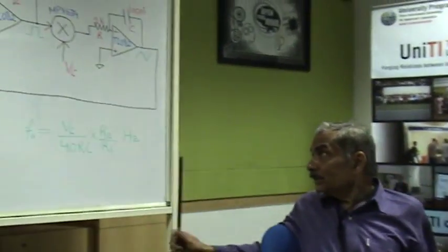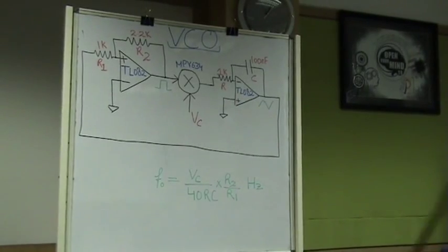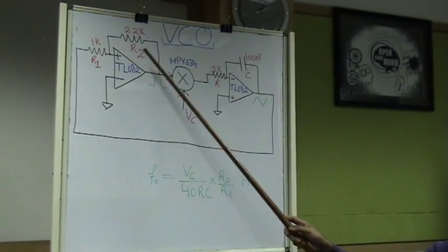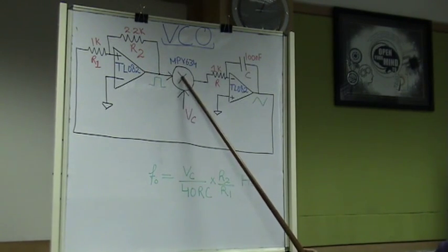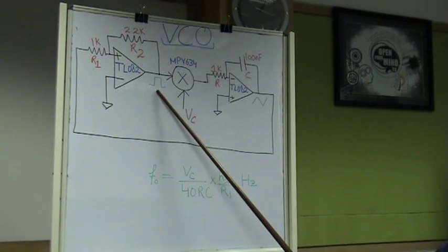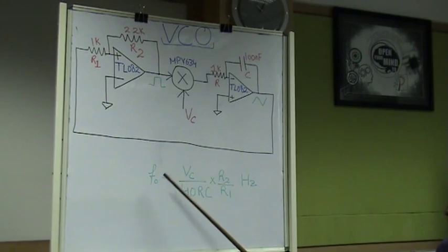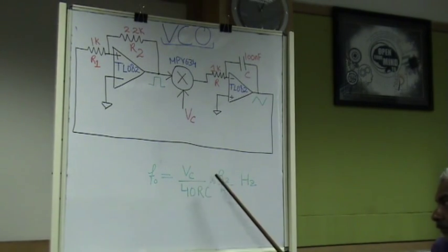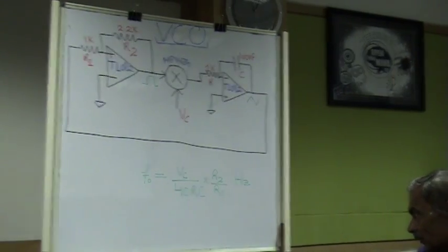Now we will see the actual circuit and how it is to be built using the ASLK kit. This is the Schmitt trigger followed by the multiplier followed by the integrator. Here we have the square wave output and here we have the triangular wave output. The frequency of oscillation is DC/(40RC) × (R2/R1) Hertz.